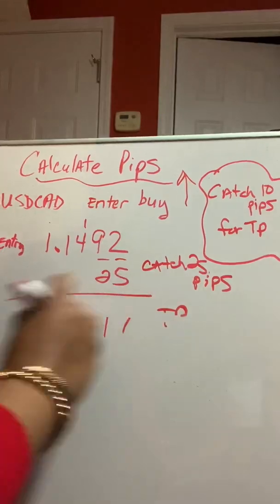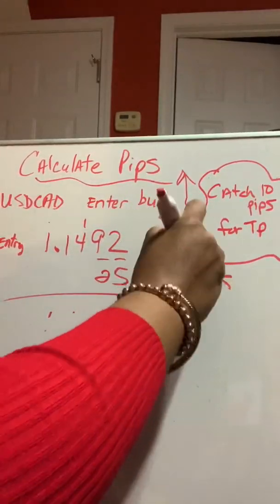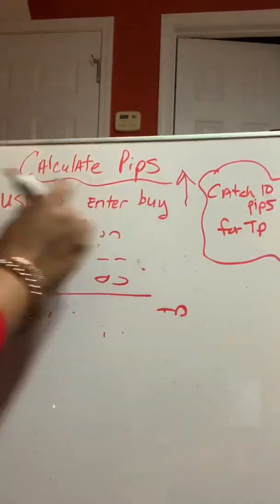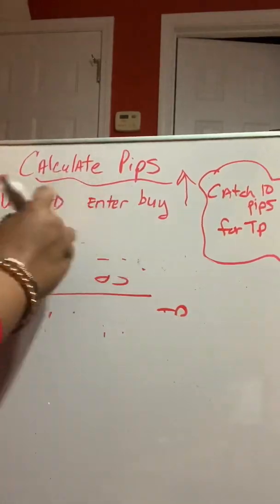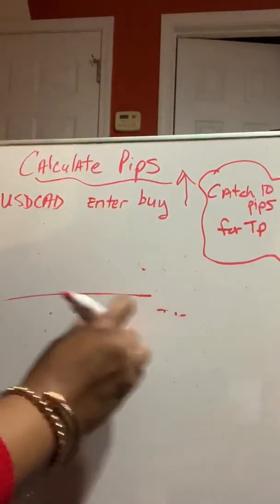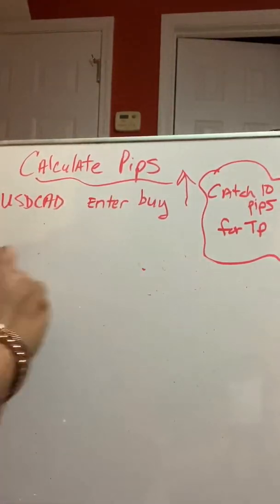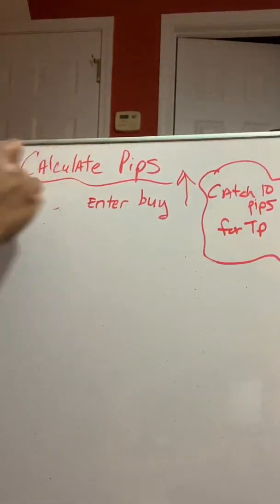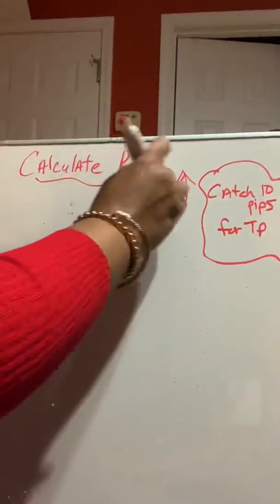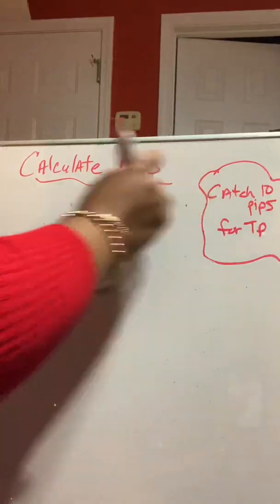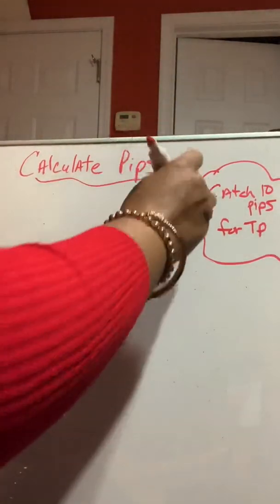So, any currency pair, if it's not a JPY, and it's a regular, just foreign currency pair, not gold, not oil, it's exempt. Okay? It's different when you're calculating pips on those pairs. Now, let's go ahead and see what the difference is.